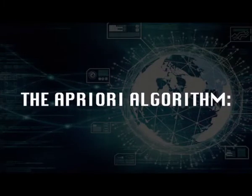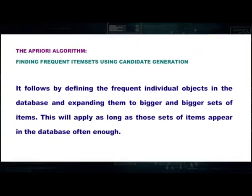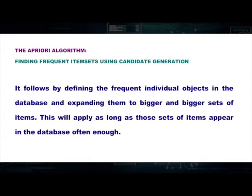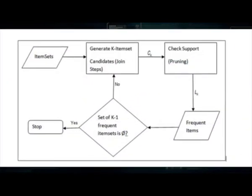The Apriori algorithm is used to find frequent item sets using candidate generation. It is an algorithm for learning transaction databases through frequent item set mining and association rule generation. It works by defining frequent individual items in the database and expanding them to bigger and bigger sets of items, as long as those sets appear in the database often enough. Frequent item sets determined by Apriori can then be used to determine association rules that highlight the database's overall trends.